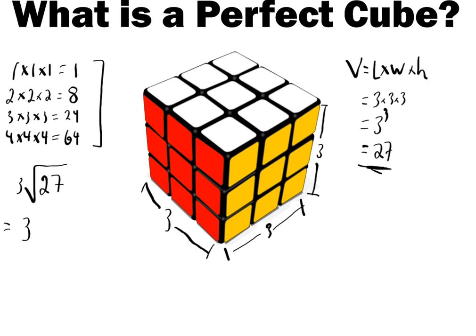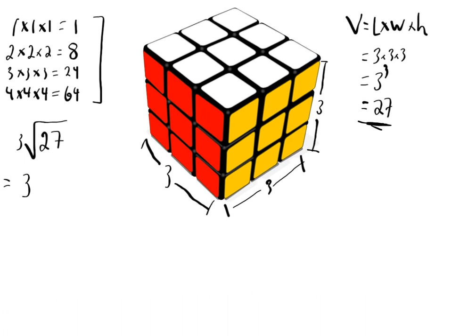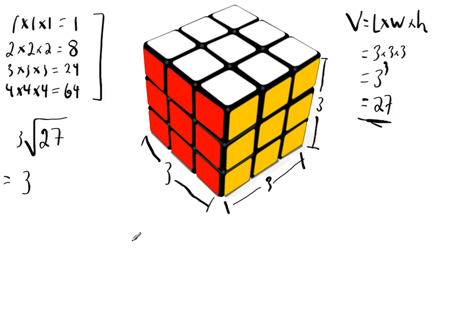With the same length, width, and height. So really the relationship I have is my volume is equal to the side length cubed. Or, you could have my side length is equal to the cube root of the volume.